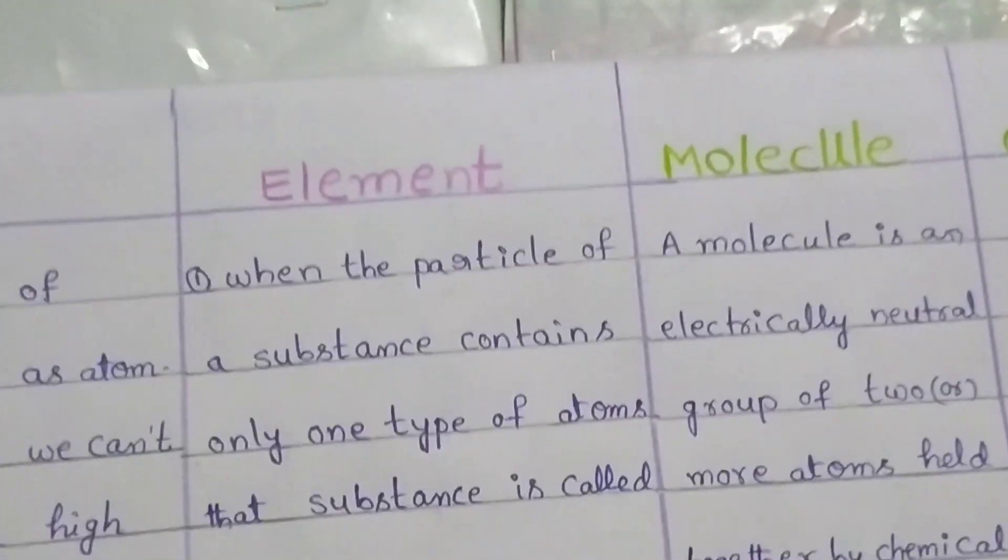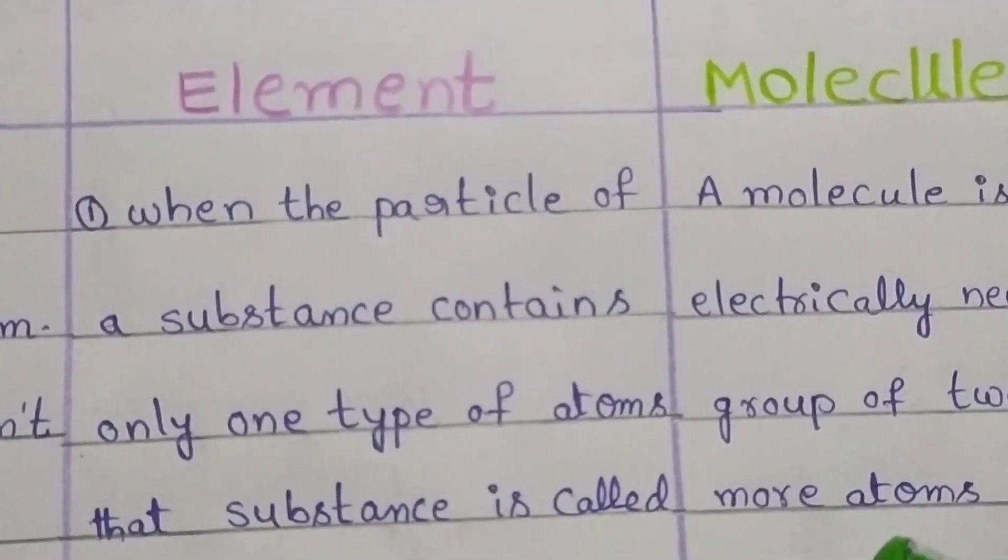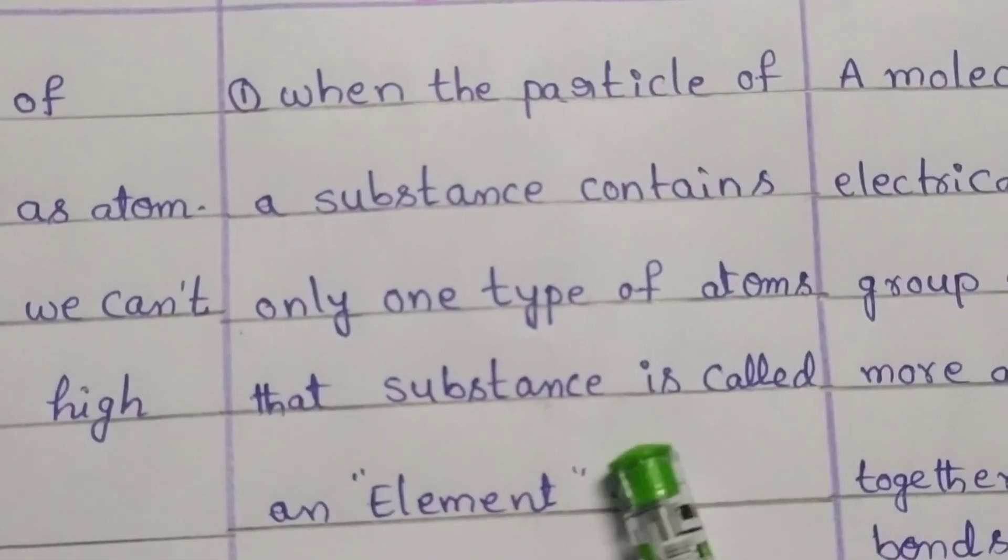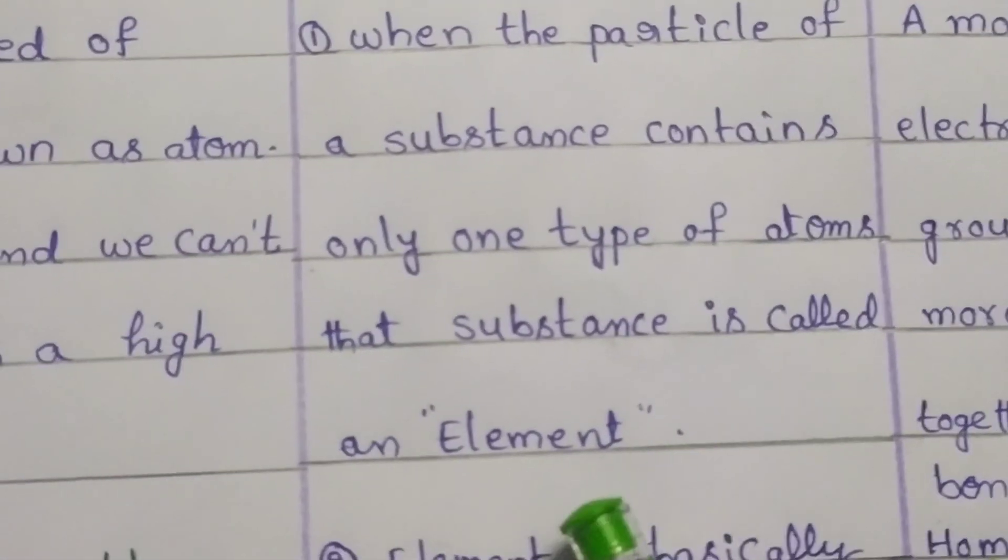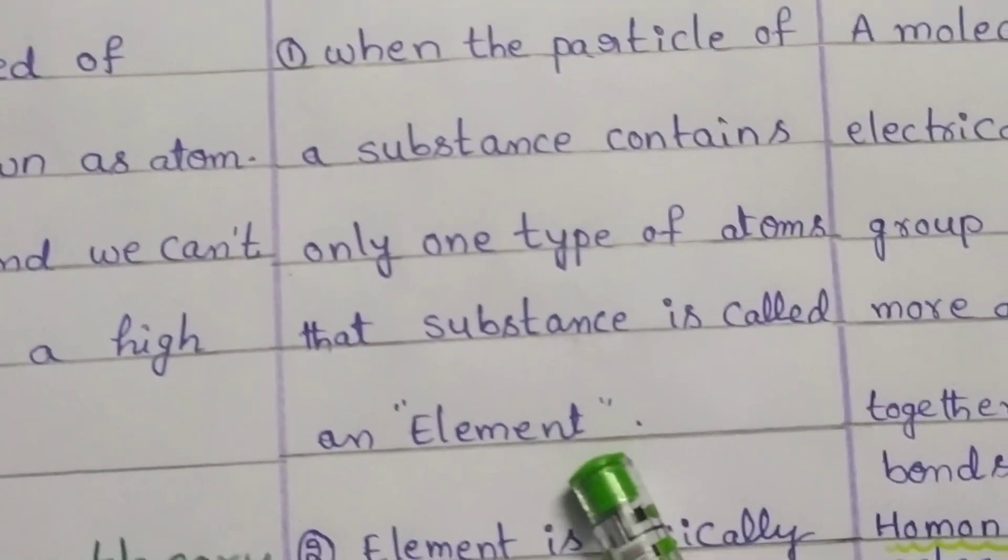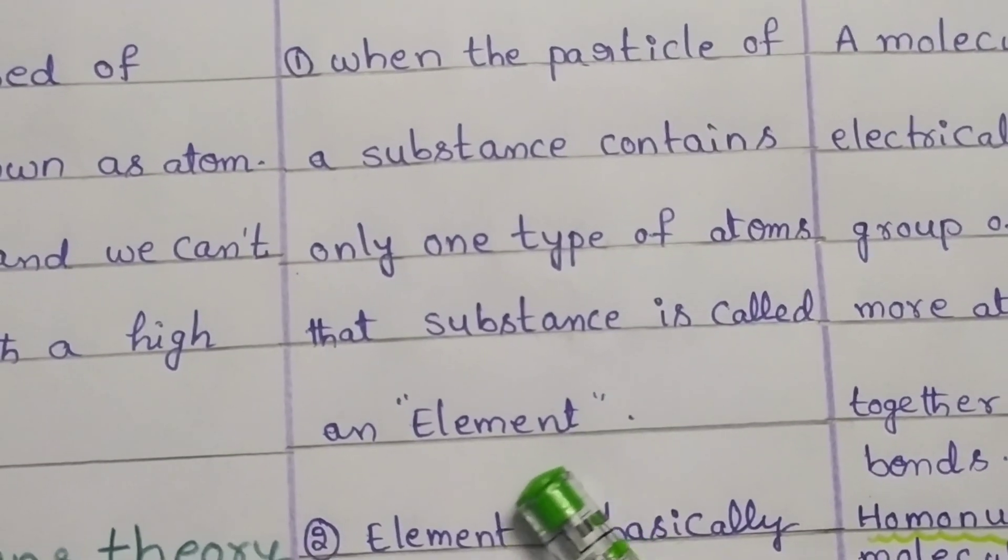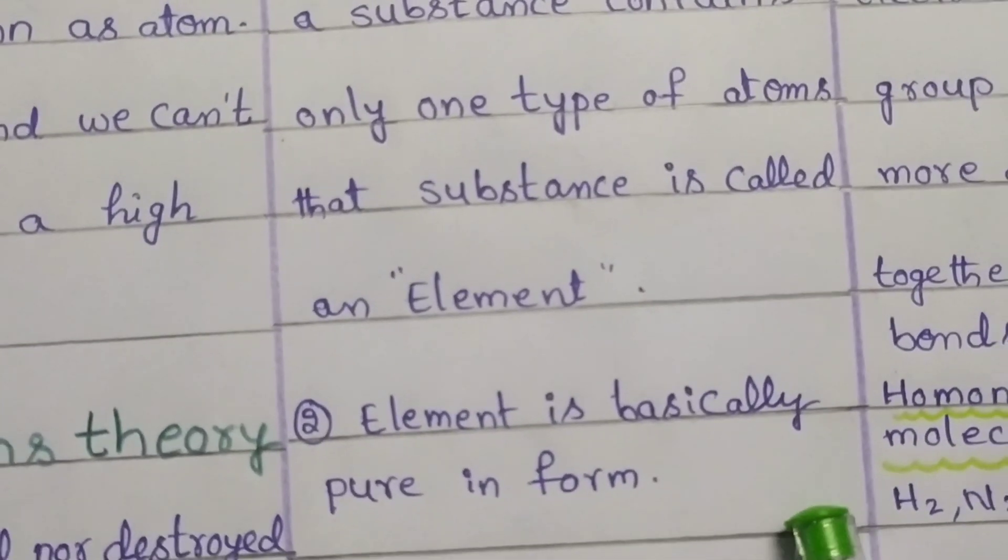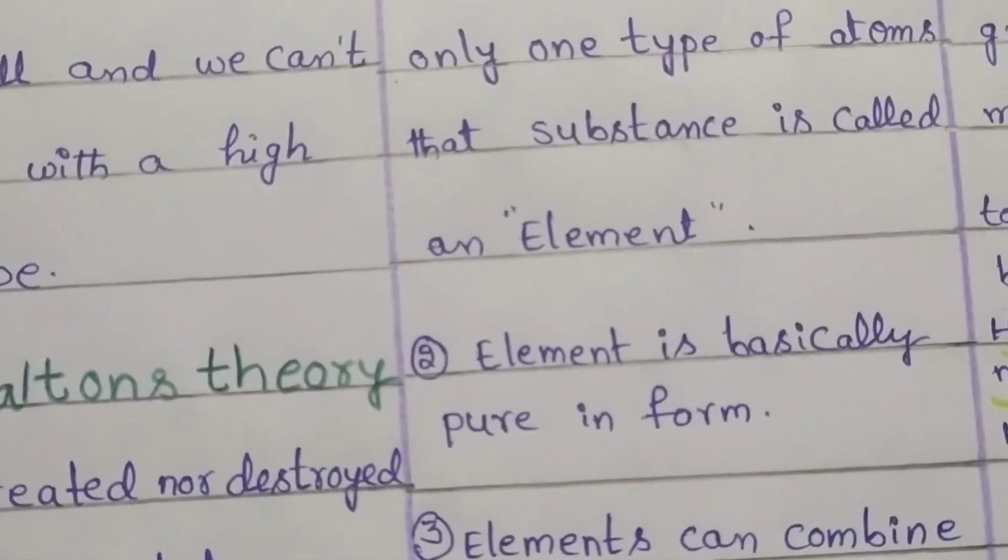Next, we discuss about element. When the particle of a substance contains only one type of atom, that substance is called an element. That means an element contains only one similar type of atom. Element is basically pure in form.